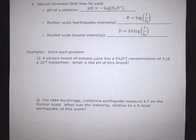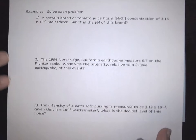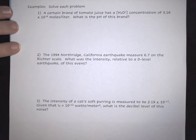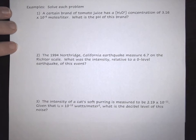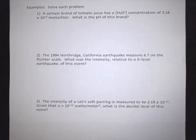First and foremost, you have to be able to identify, based on the context of your problem, which formula you're going to be using. In this first example, a certain brand of tomato juice has a concentration of 3.16 times 10 to the negative 6 moles per liter. The question is to find the pH.